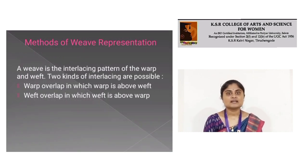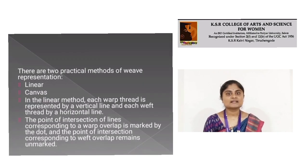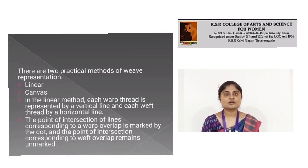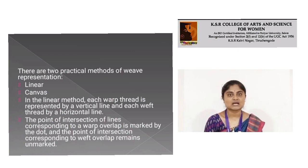Method of weave representation: A weave is the interlacing pattern of warp and weft. Two kinds of interlacing are possible — warp overlap, in which warp is above weft, and weft overlap, in which weft is above warp. There are two practical methods of representation: linear and canvas. In the linear method, each warp thread is represented by a vertical line and each weft thread by a horizontal line. The point of intersection corresponding to the warp overlap is marked by a dot, and the point corresponding to the weft overlap remains unmarked.